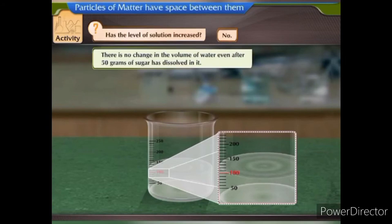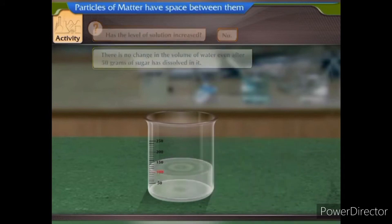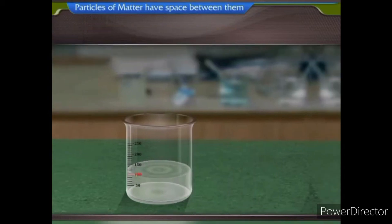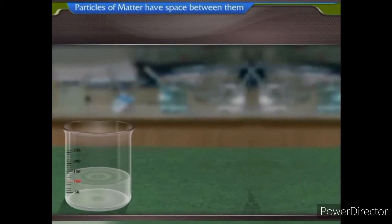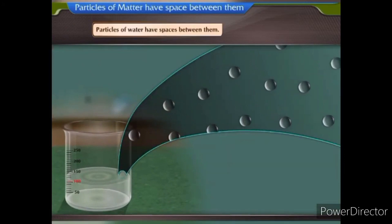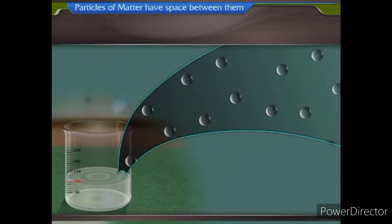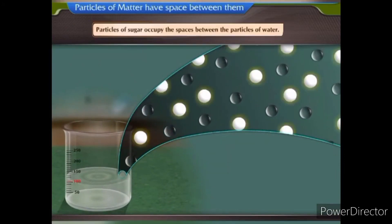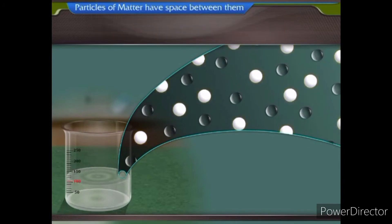There is no change in the volume of water even after 50 grams of sugar has dissolved in it. This can be explained thus: particles of water have spaces between them. Particles of sugar occupy the spaces between the particles of water. Hence, there is no change in the volume of water in the beaker.